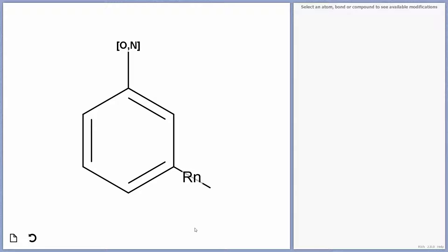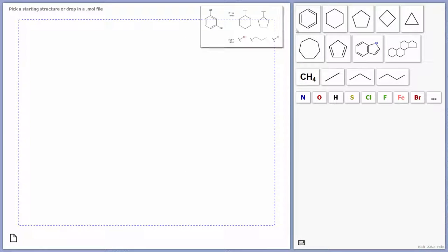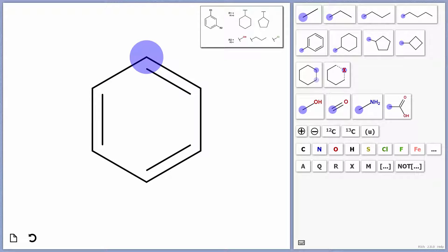Once again, you can see having context-sensitive changes on the right-hand side makes it really easy for users to get to the features they want. For structure number five, we've got some R groups and a Markush structure. I start out as normal, and I'm going to put an R group on the top here.